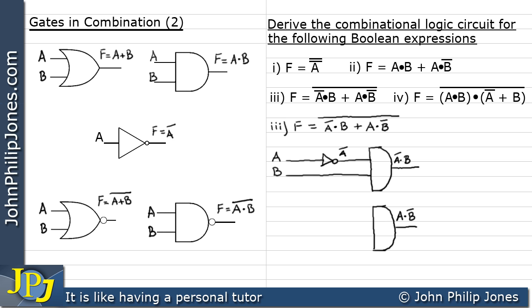To get A (not NOT A), I take a tap from the A line on the input side of the NOT gate, loop over to show it's not connected to B, and bring it into one input of the second AND gate. Then I take a tap off the B line, bring it down, and put it through a NOT gate to get NOT B. That NOT B becomes the second input to the AND gate, giving an output of A AND NOT B.